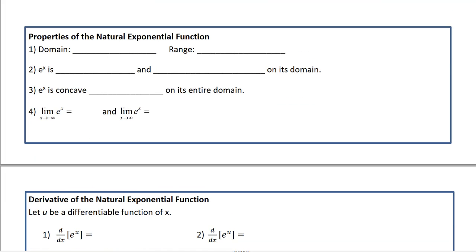Properties of the natural exponential function. The domain for e is going to be negative infinity to infinity, so every x works, but the range is 0 to infinity, and 0 is not included. 0 is a horizontal asymptote. e to the x is continuous everywhere, continuous, and it's increasing on its domain.